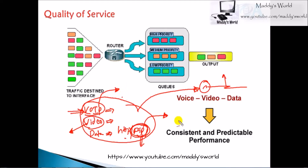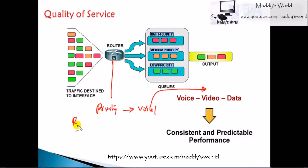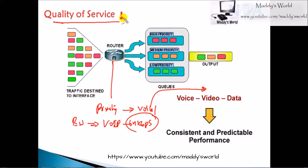What we can do is configure priority for specific traffic, saying that voice or video traffic should be sent first before all remaining traffic. We can define that voice traffic should get a guaranteed bandwidth of 64 kbps on a particular link in case of congestion. We can also restrict FTP downloads from utilizing all the bandwidth using policing options.